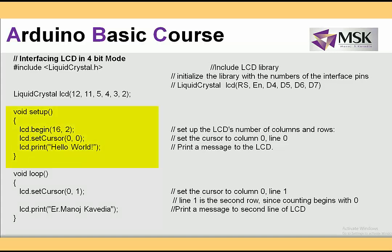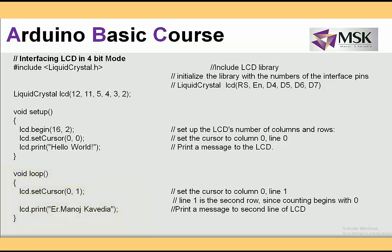lcd.print() will display 'Hello World' on the first line. In the loop function, I call setCursor(0, 1) — the first parameter is column and the second parameter is the line — to move to the second line. There it will print 'Er. Manoj Kavedia'. So the first line displays 'Hello World' and the second line displays 'Er. Manoj Kavedia', both starting at column 0.